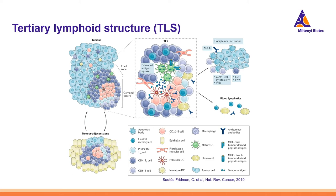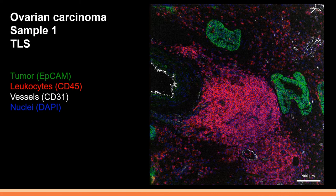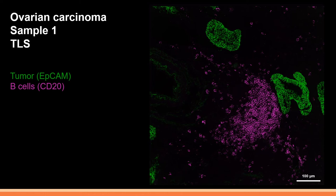Here you see the first ovarian cancer sample. You see the tumor tissue represented by the EpCAM signal in green and the associated leukocytes marked by CD45 in red. The nuclei are depicted in blue and vessels are shown by the CD31 signal. The massive accumulation of leukocytes adjacent to the tumor already indicates that this could be a TLS. In this image you see the distribution of B cells in the structure — indeed we have a B cell zone indicated by the CD20 signal, which is already mentioned as characteristic of a TLS.